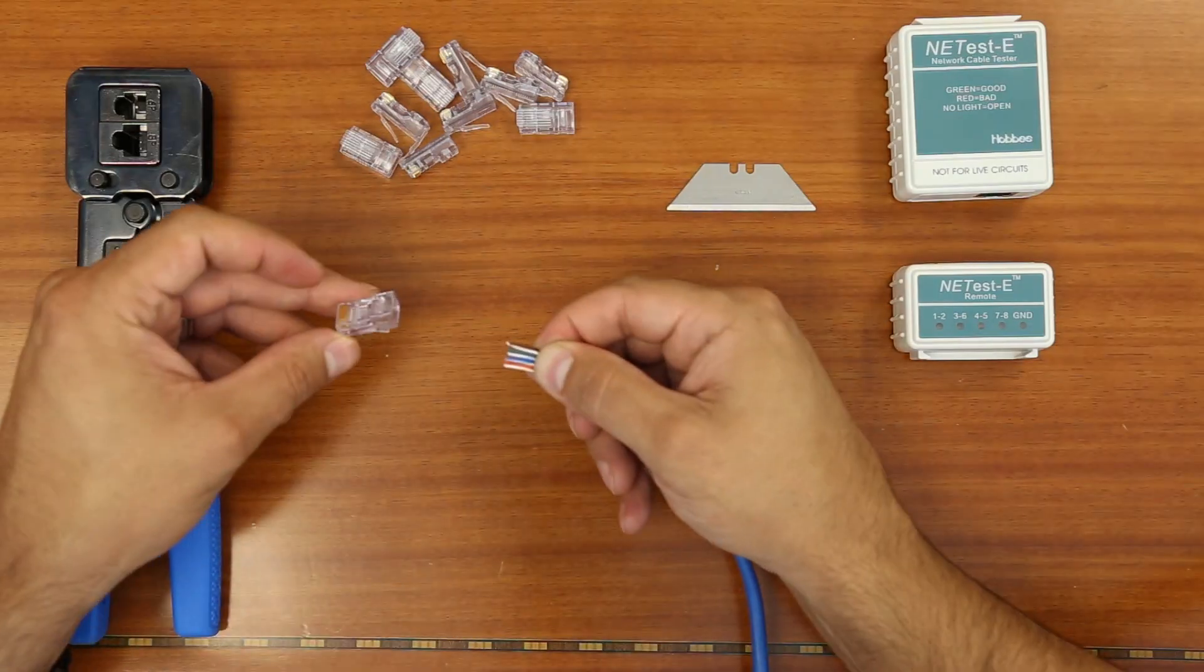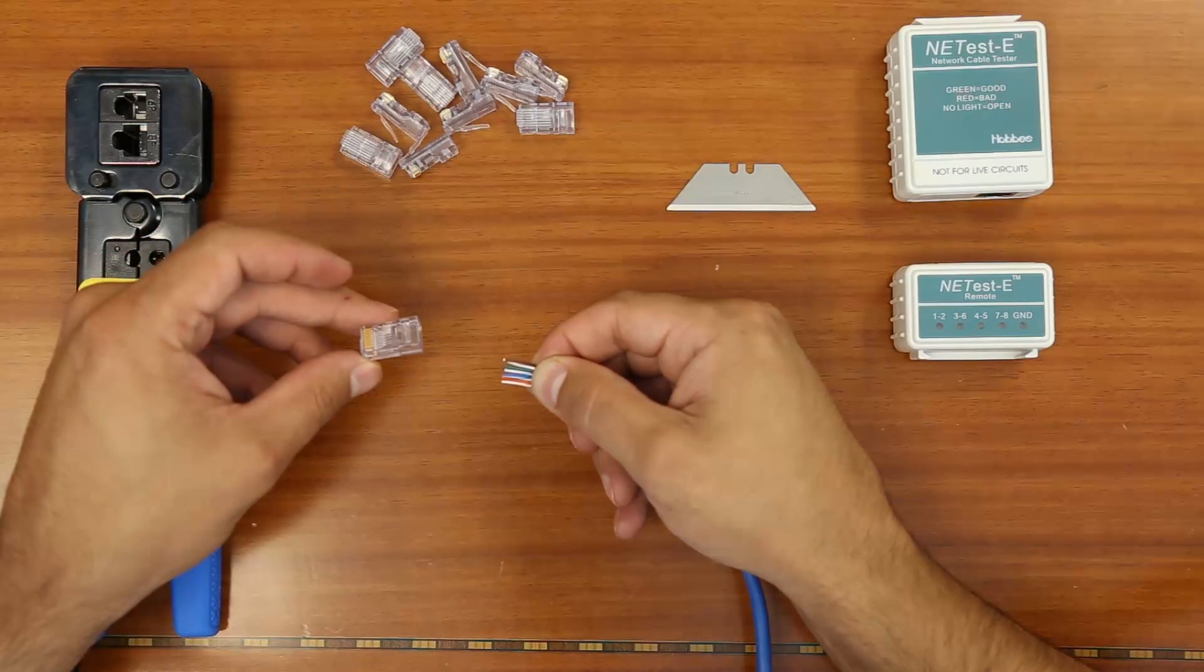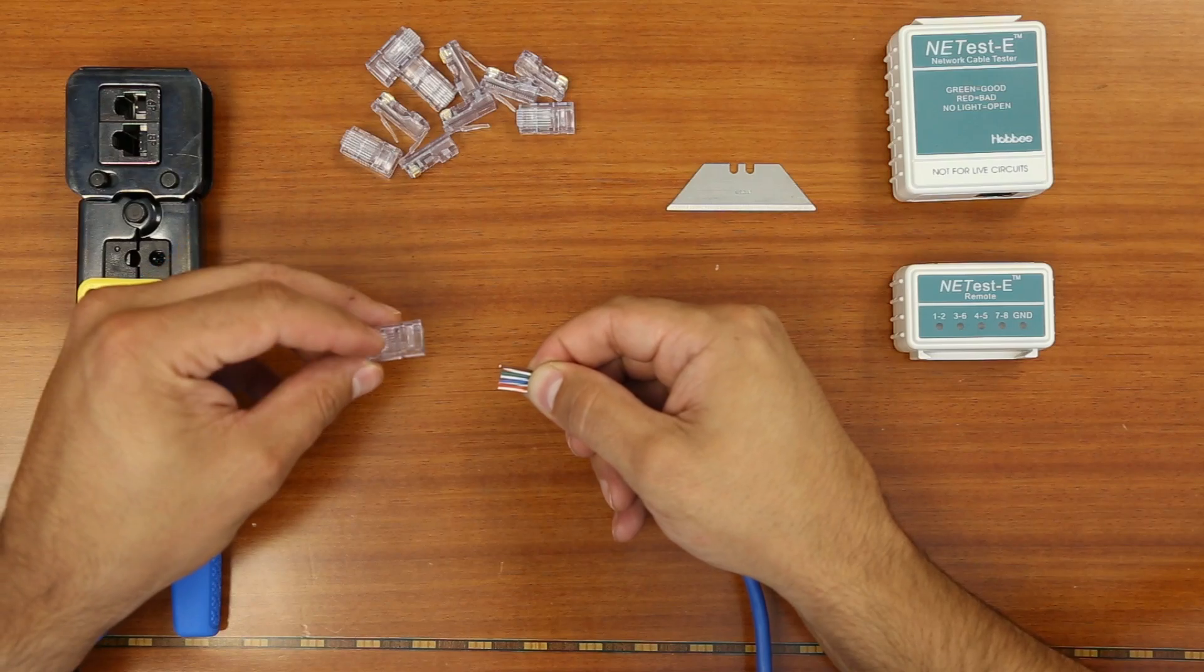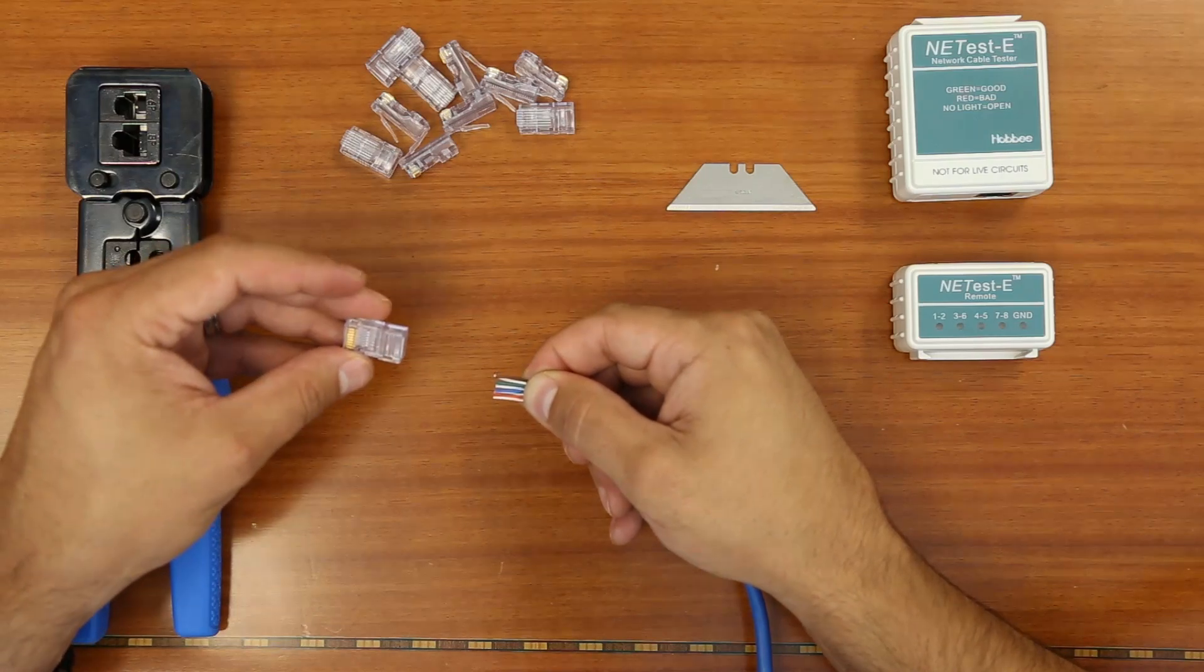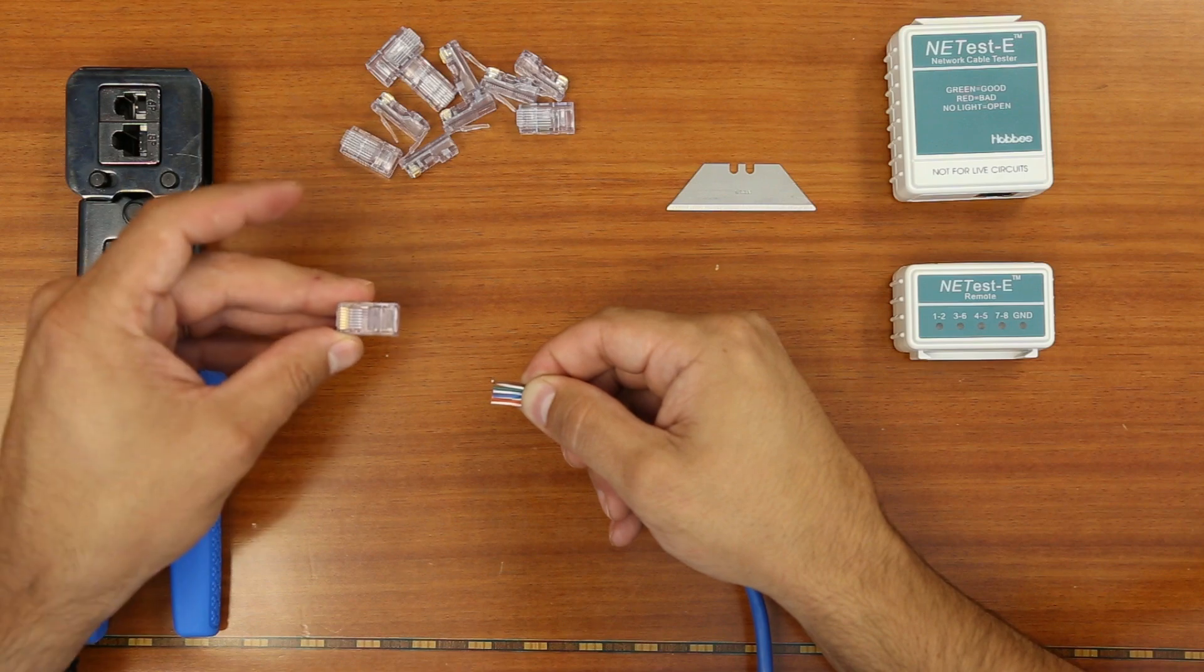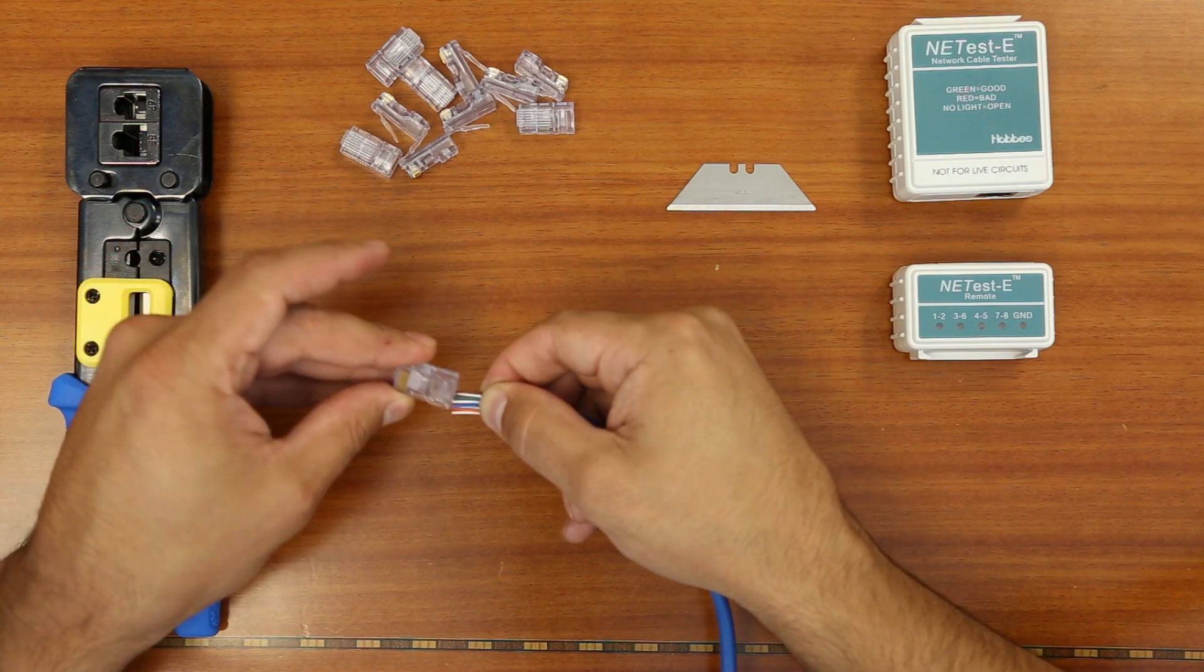Now we can move on to step three. With our cables lined up in the correct color code sequence, orientation is going to be important here. We need to make sure that the tab on the connector is facing down. Now we can simply just feed the wires through the connector.